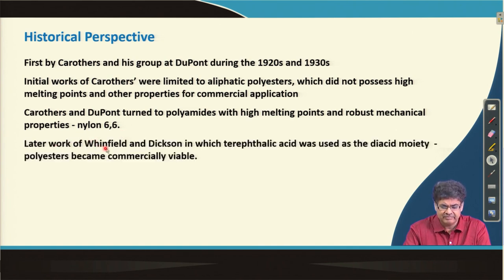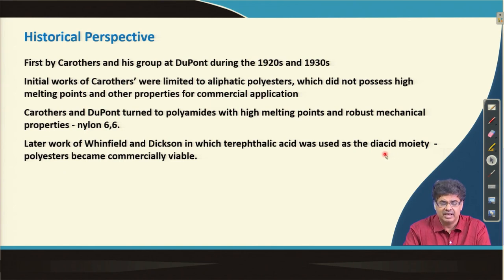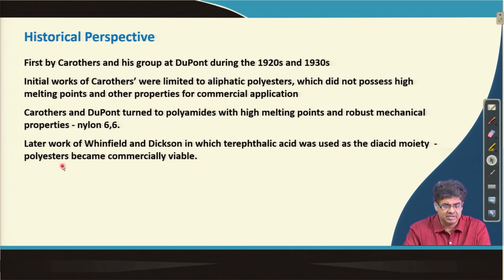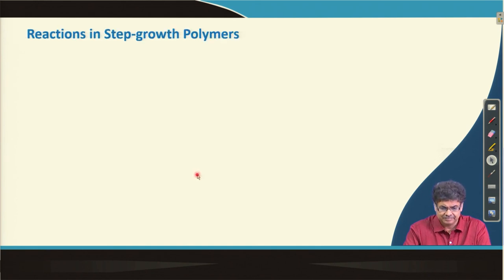Later work by Winfield and Dixon — when they used terephthalic acid instead of isophthalic acid as the diacid moiety — allowed them to synthesize PET (polyethylene terephthalate) polyester, which became commercially viable.